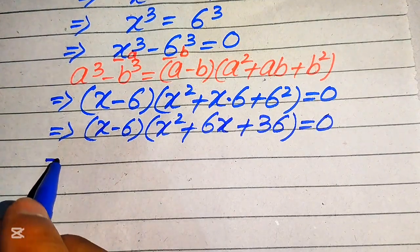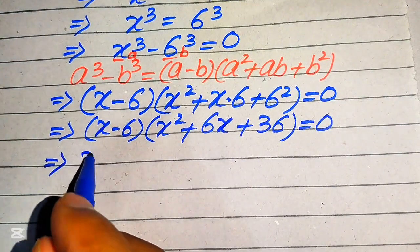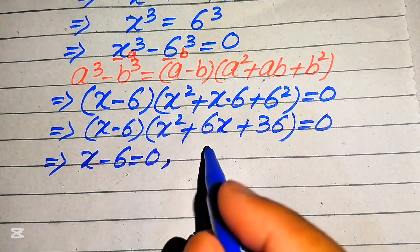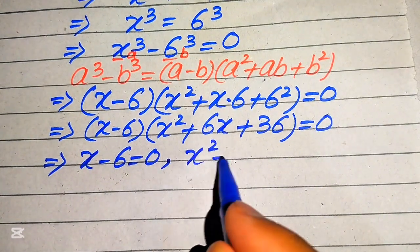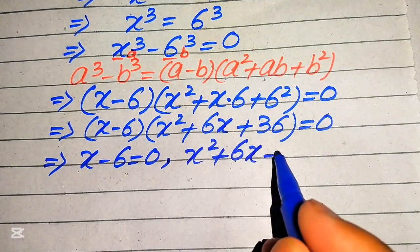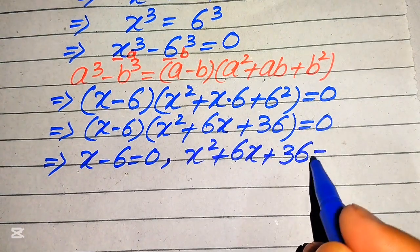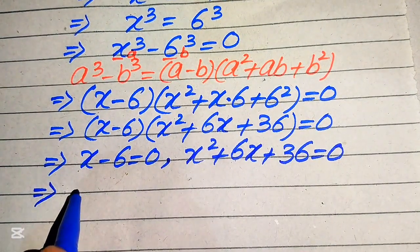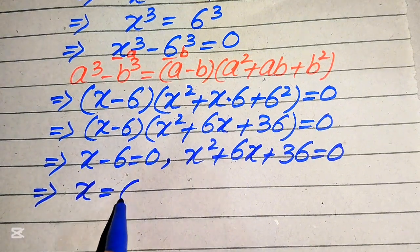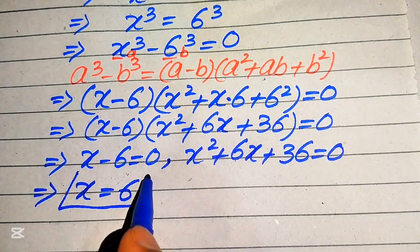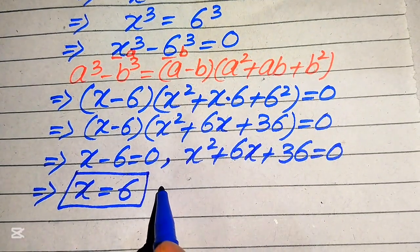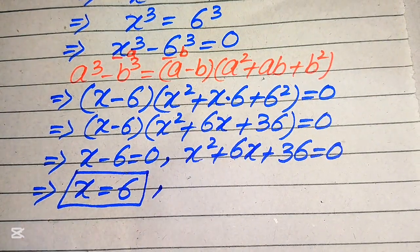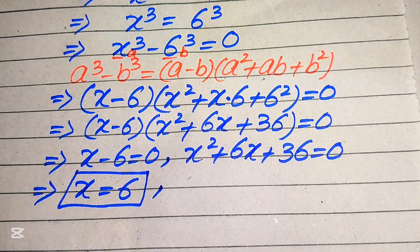We break this into two cases. The first case gives x minus 6 equals 0, so x equals 6. This is our first real root of the given equation.